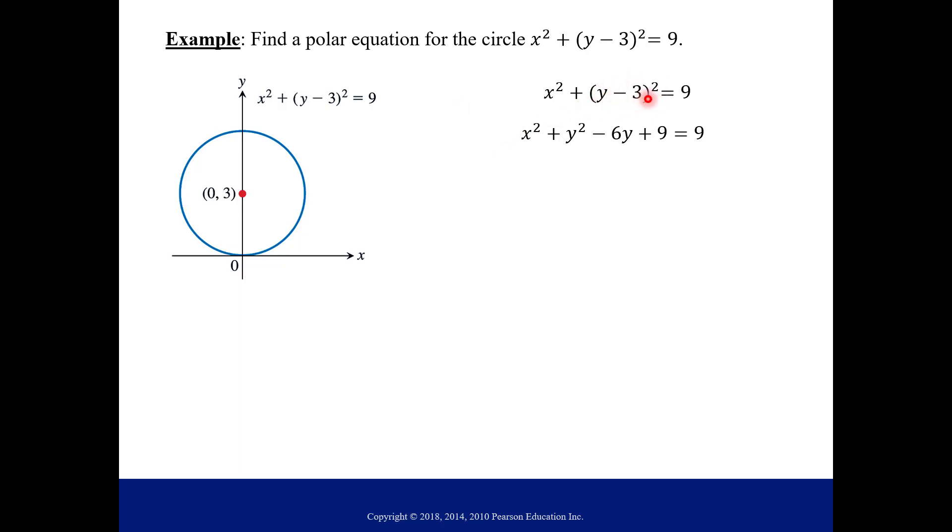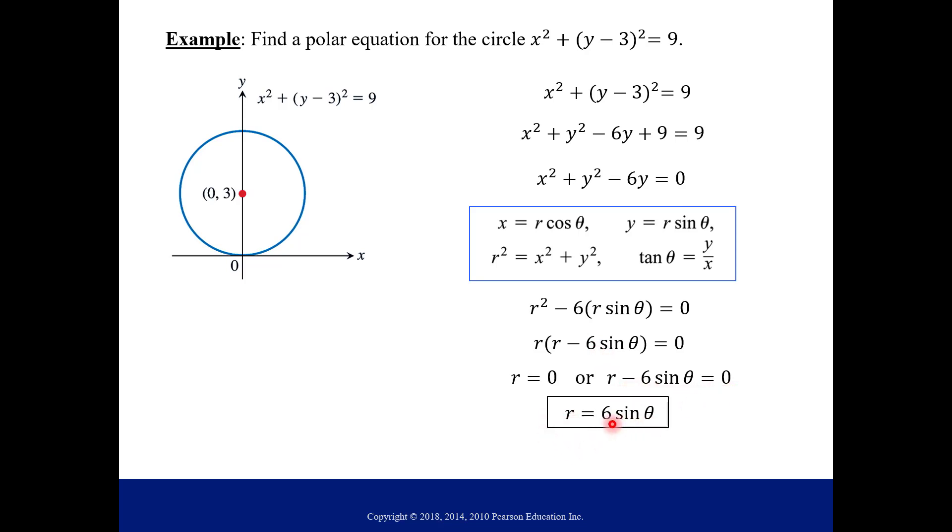So if I just FOIL this quantity out with y minus 3 squared, we get y squared minus 6y plus 9. Let's subtract 9 from both sides. And then we'll use our relationships between polar and Cartesian. So everywhere there is an x, I can put an r cosine theta. Everywhere there's a y, I can put an r sine theta. But anytime you already see an x squared plus a y squared, what would be easier is if you just replace it with r squared. So let's do that. And then right here with this y, we'll say r sine theta. So we have r squared minus 6r sine theta equals 0. We can factor out an r, and then we have a product that equals 0. So then either r equals 0 or r minus 6 sine theta equals 0. And so this would be r equals 6 sine theta. Now why I only kept this version of the answer is because this one actually encompasses r equals 0. So if you were to plug in, let's say 0 for theta, r would be 0. So this answer actually encompasses this answer as well.